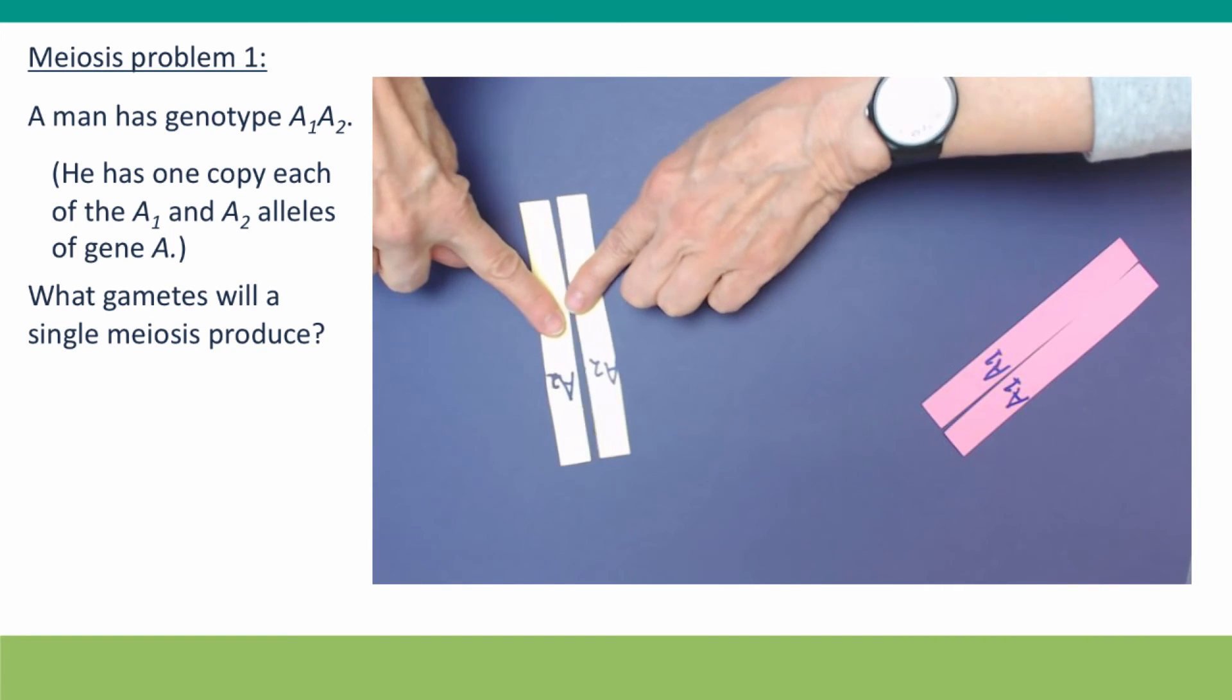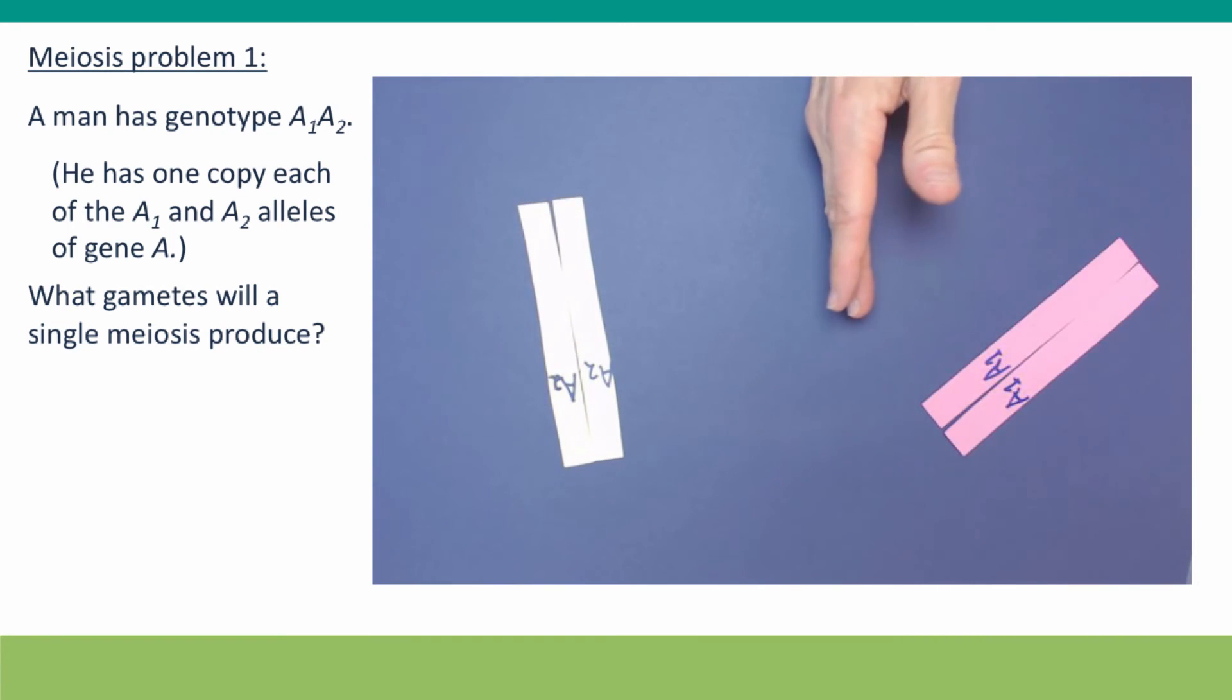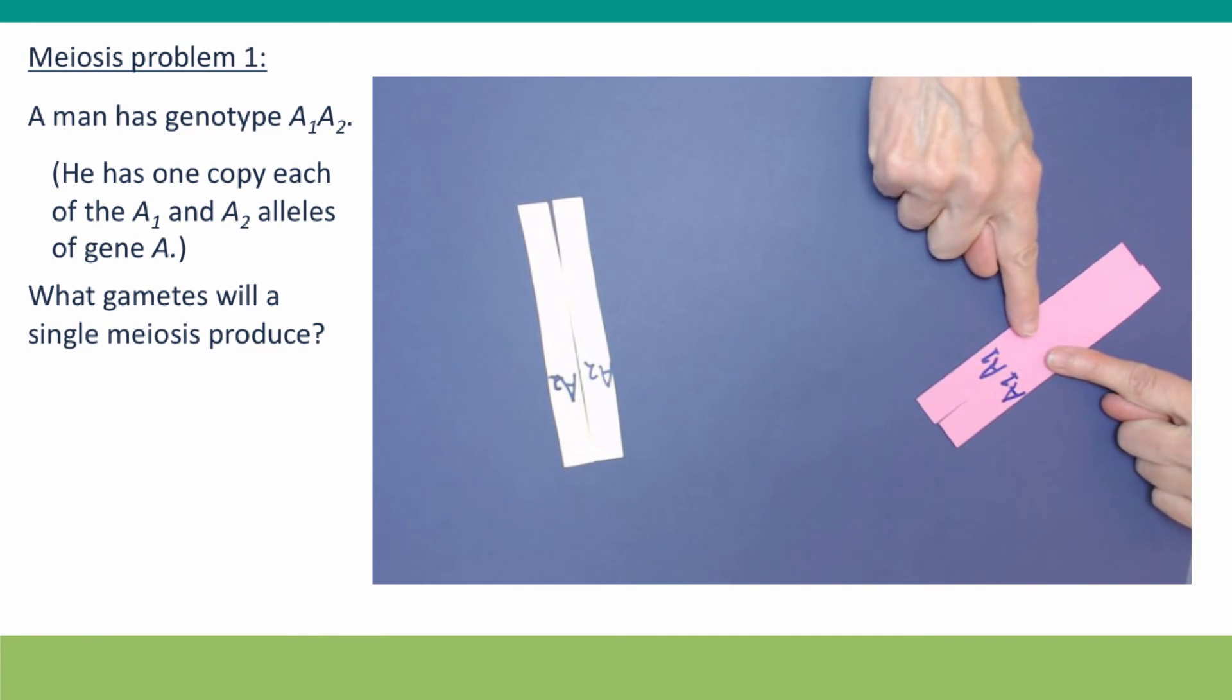Usually the two daughter cells from meiosis I are moving more or less in synchrony. Once all of the chromosomes in the cell are aligned and have moved to the center with spindle fibers attached to both sides, then the signal comes.